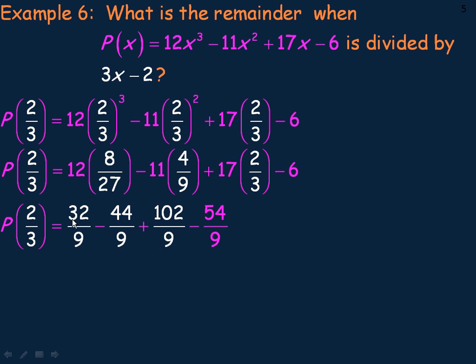So we would just go 32 take away 44 plus 102 minus 54. That's all over 9. That gives you 36 over 9, which divides out to 4.